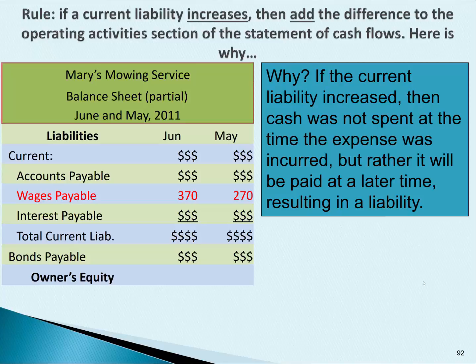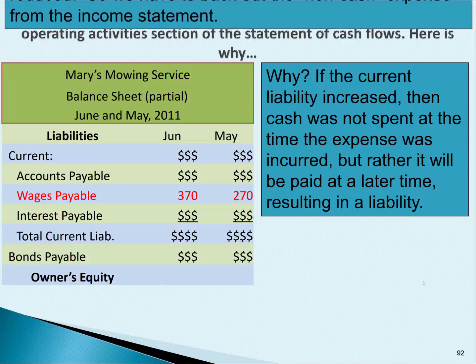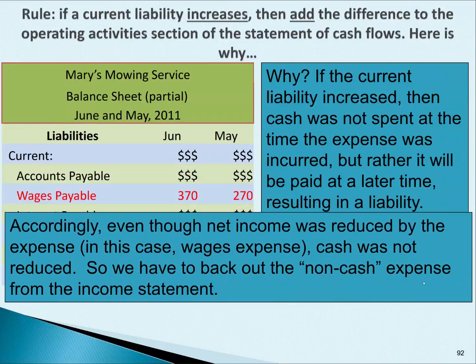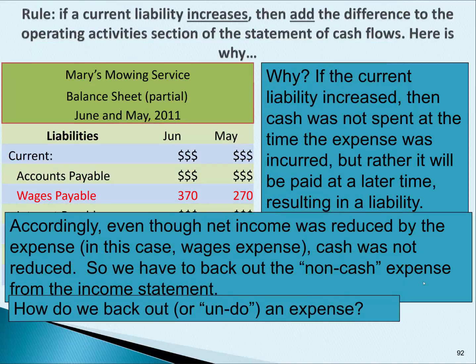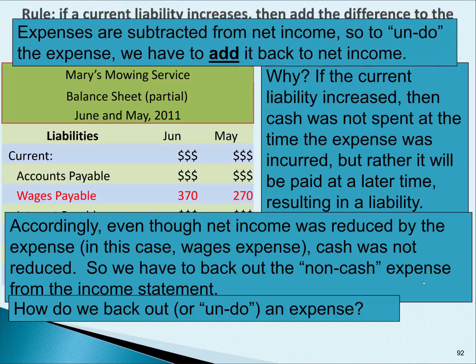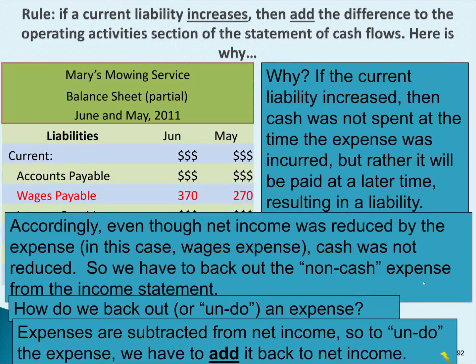We have an expense, which makes net income go down, but there was no resulting decrease in cash. Even though net income was reduced by the expense — in this case, wages expense — cash was not reduced. So we have to back out the non-cash expense from the income statement. Since an expense is subtracted, you have to add it back to net income. That is why if wages payable increases, you add the difference to cash flow.